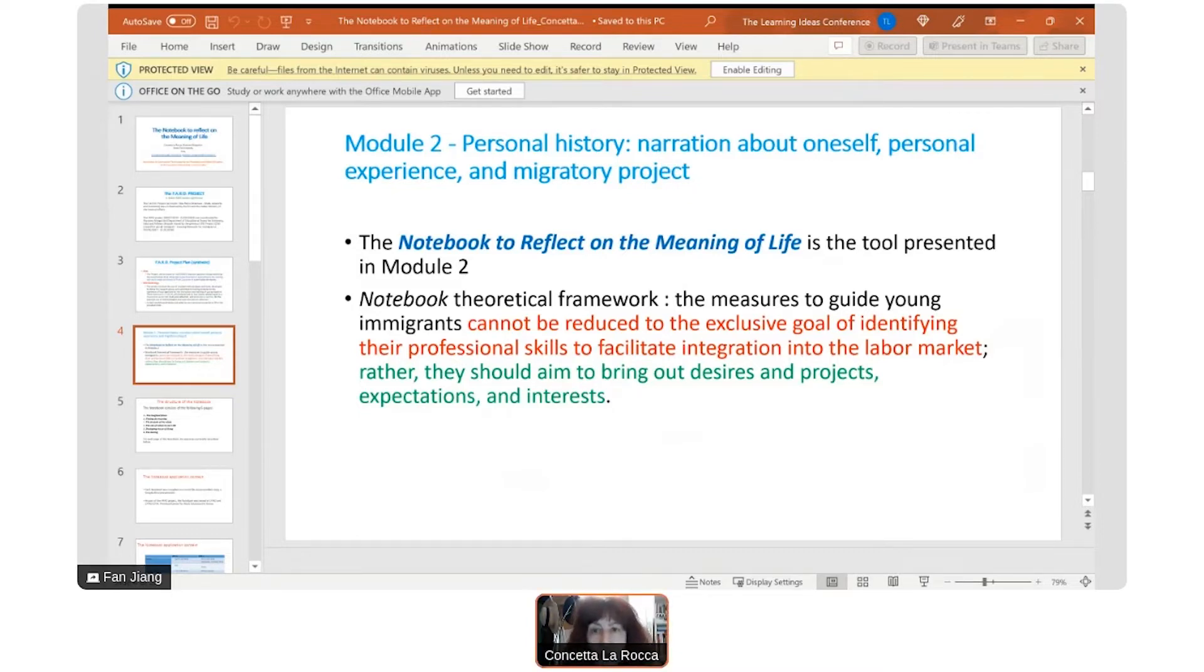The structure of the notebook consists of the following six pages: One, the imagined future. Two, finding the meaning. Three, the analysis of the values. Four, the role of values in one's life. Five, developing the art of living. Six, the sharing. For each page of the notebook, the exercises are briefly described below.